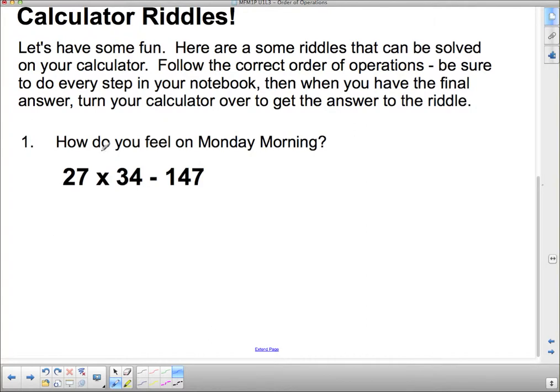Okay, this is a pretty simple order of operations question. We have to do multiplication first. There's no brackets or exponents, so we do multiplication. So, 27 times 34, and that's a big one. I don't expect you to do it without your calculator. 27 times 34 is 918, and we're going to subtract 147. So, 918 subtract 147 gives us 771. And 771, if we turn that upside down, it tells us that on Monday morning, we feel ill. Ill on Monday mornings. I don't know about you, but sometimes I feel ill on Monday mornings. I could use an extra little bit of sleep.